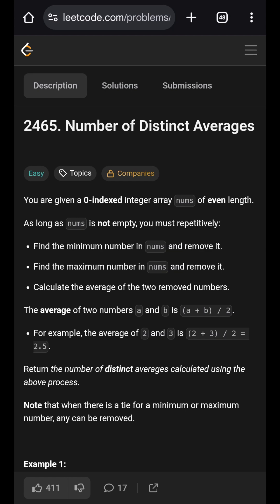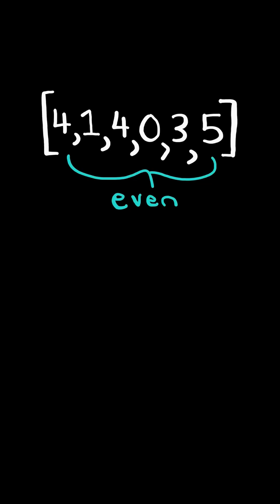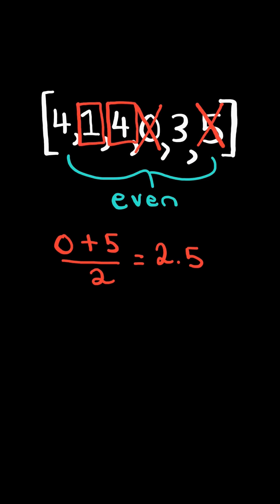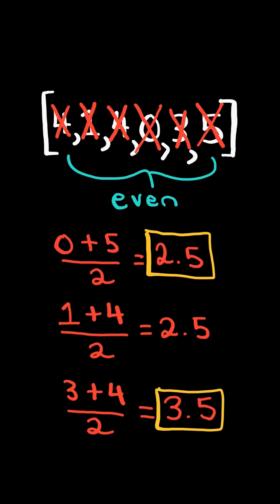Number of distinct averages. Given an even-length list, find the minimum and maximum element and calculate their average. Then remove those numbers and repeat the process — find the minimum and maximum, calculate the average, and remove those numbers. At the end of the process, identify all unique averages and return the number of unique averages.